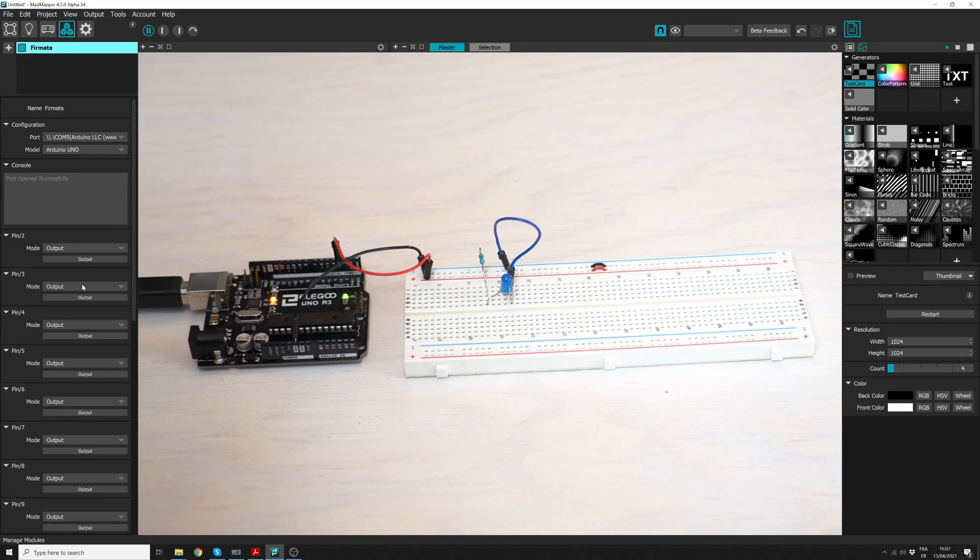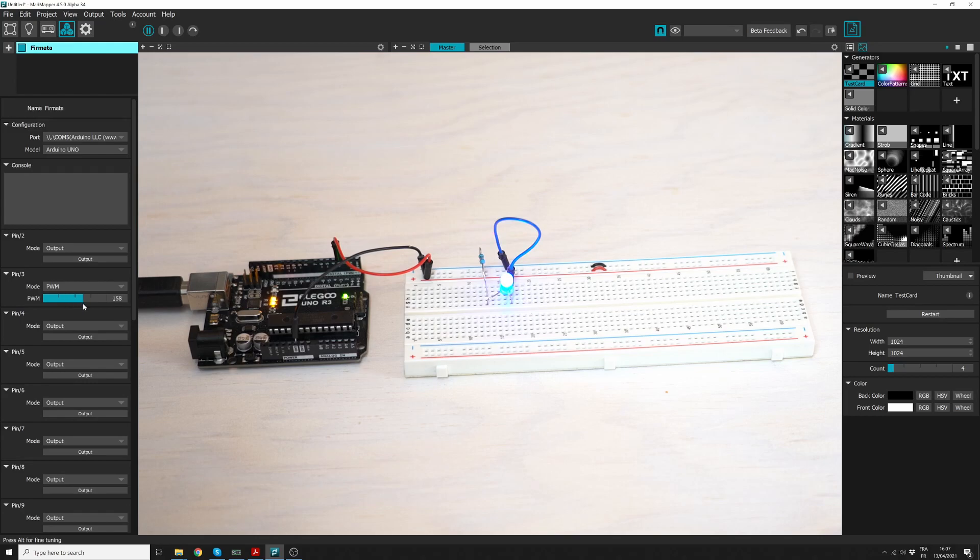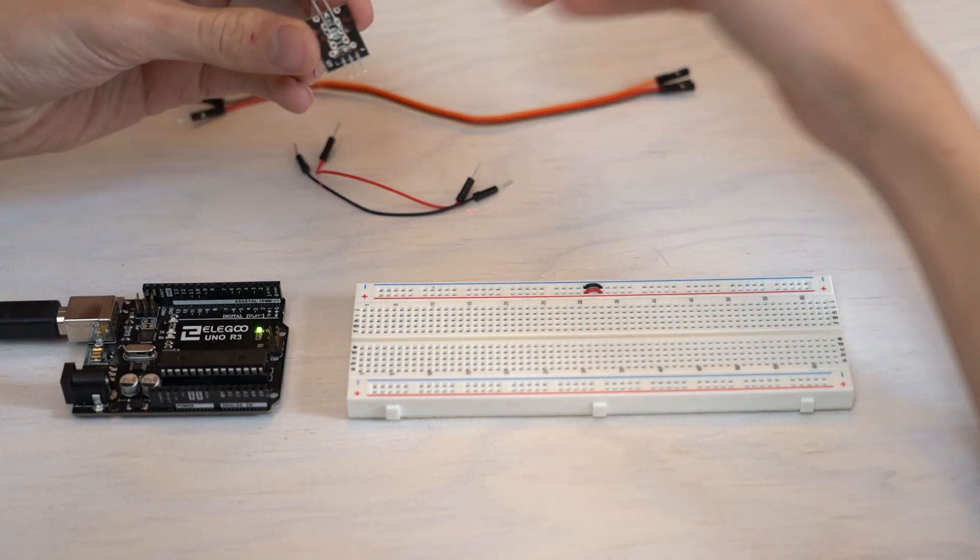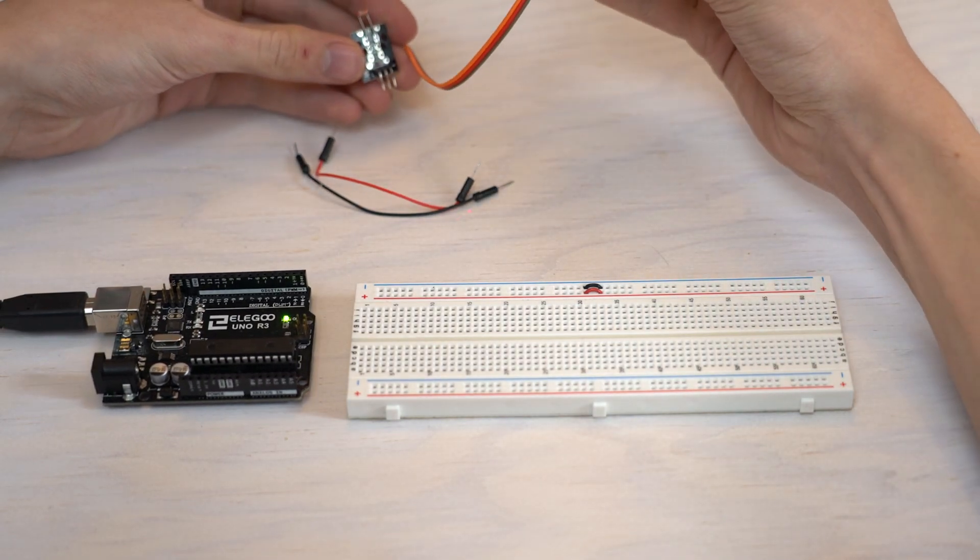Go down to pin 3, change the mode to PWM, and increase the intensity of the LED by moving the slider. Right, are you still with me? MadMapper can also react to sensors. Here you can see an example with a light sensor.